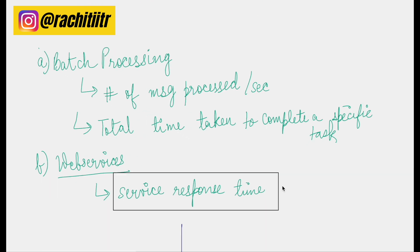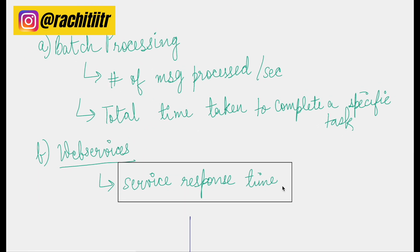These numbers can be different for different systems. For example, if you are considering a batch processing system, the number of messages processed per second is something meaningful that you would want to measure. You can also measure the total time taken to complete a specific task. Leveraging parallelism using multiple cores, you can track improvement — like last year we completed the task in 300 milliseconds, now we do it in just 50 milliseconds, which is six times better.